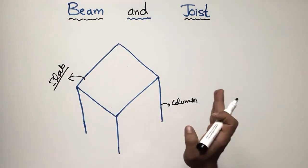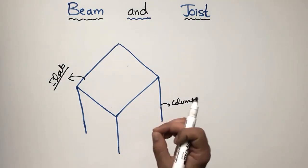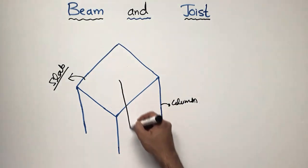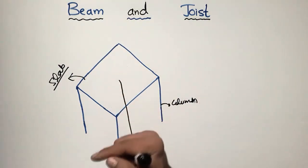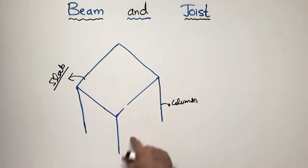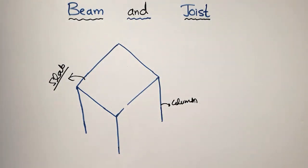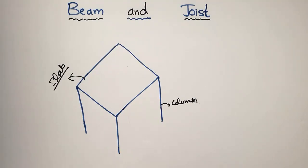Joists are mainly provided where there is a long span building and you don't want to provide a column in the center of the building. Because of the architectural view — architects don't like to have a column in the center of the building — engineers design the floor slab system with the help of joists.